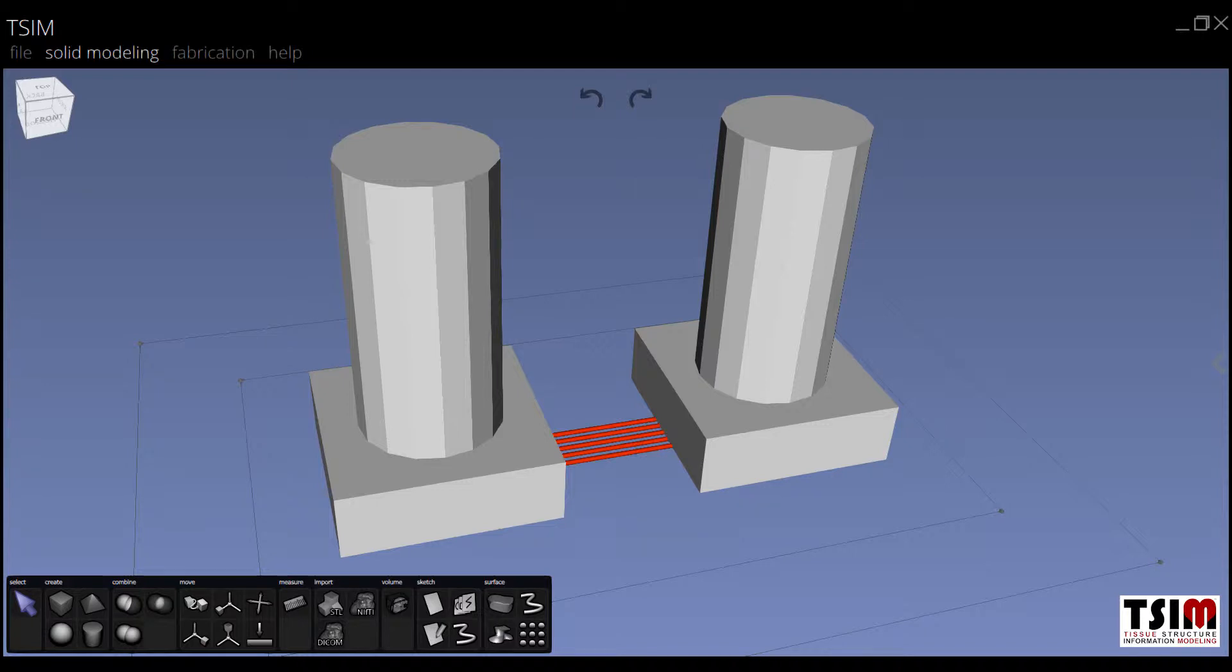And connecting the two reservoirs are five parallel microfluidic channels, shown here in red, which will serve as the perfusion routes.